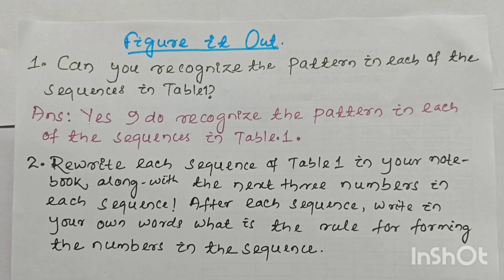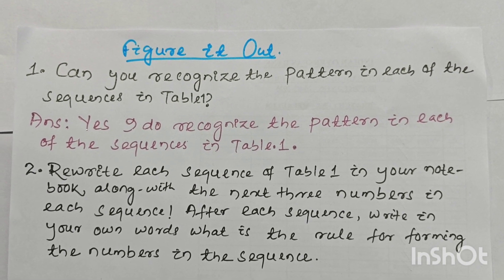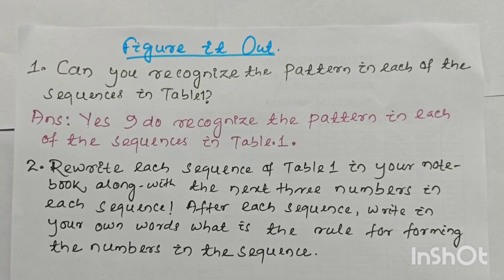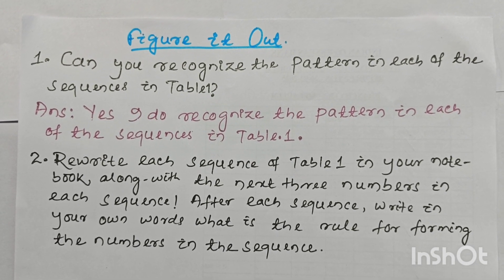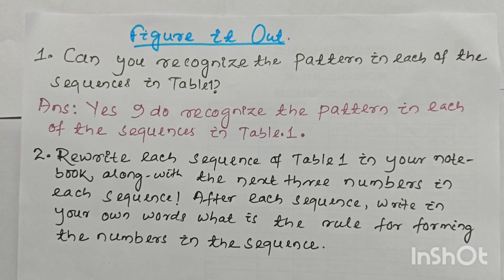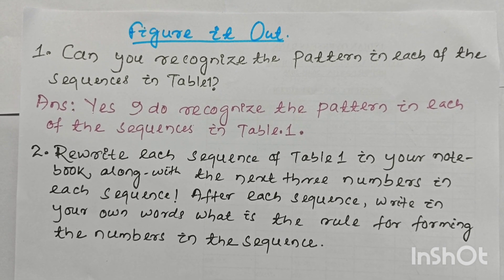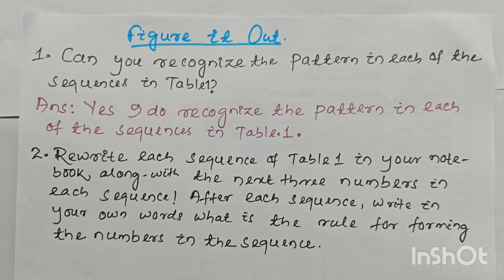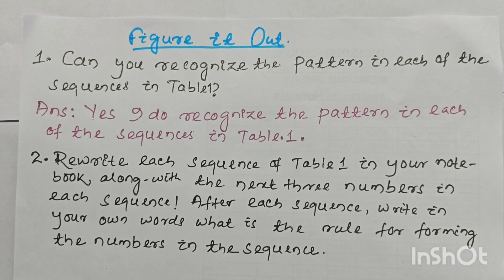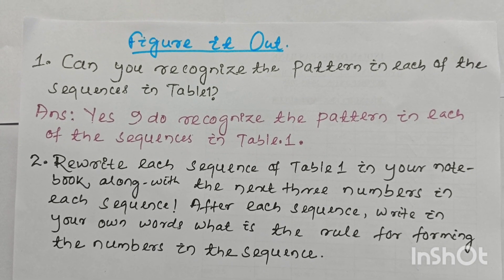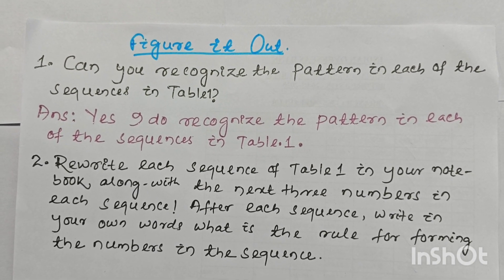Question number 2: Rewrite each sequence of table number 1 in your notebook along with the next three numbers in each sequence. After each sequence, write in your own words what is the rule for forming the numbers in the sequence.